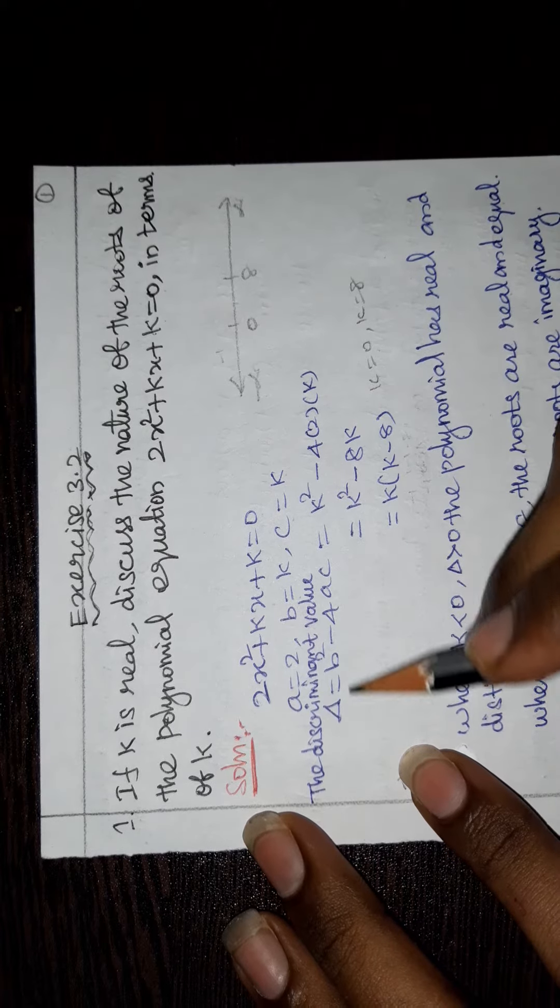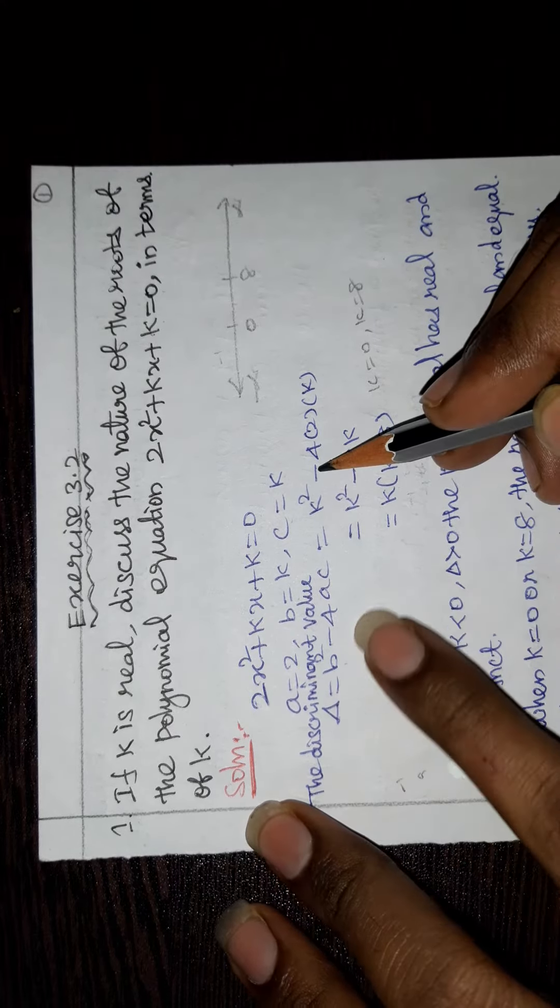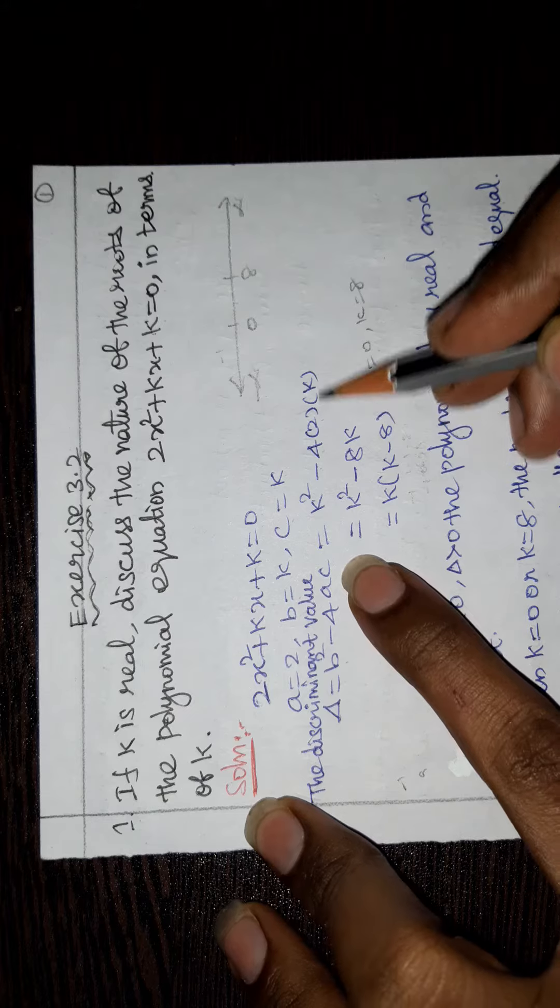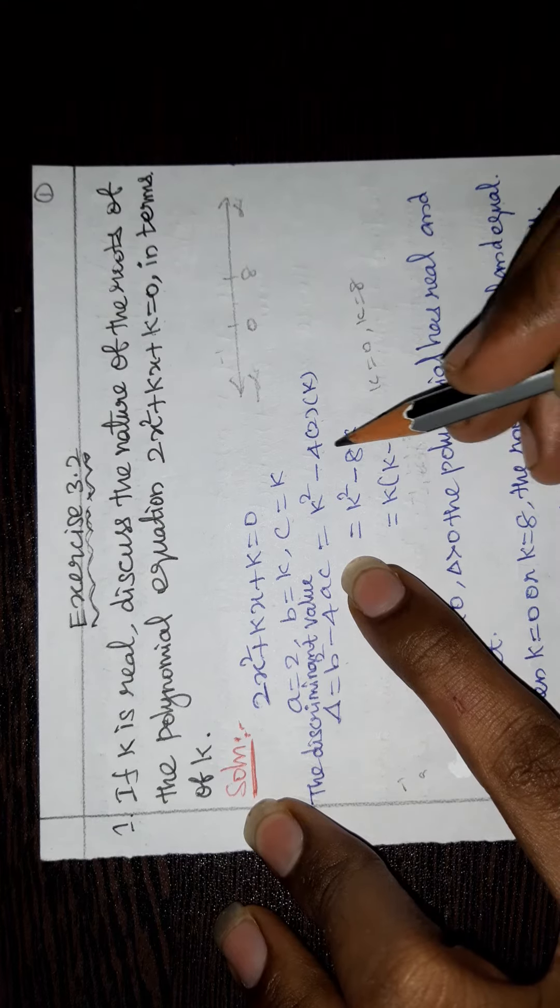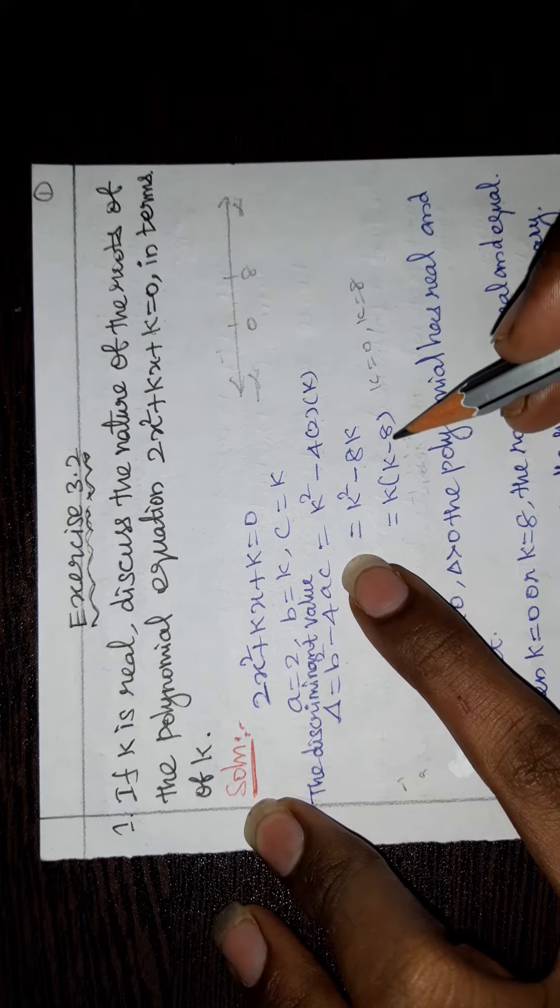The discriminant value Δ = b² - 4ac = k² - 4(2)(k) = k² - 8k. Taking k common outside, k(k - 8).